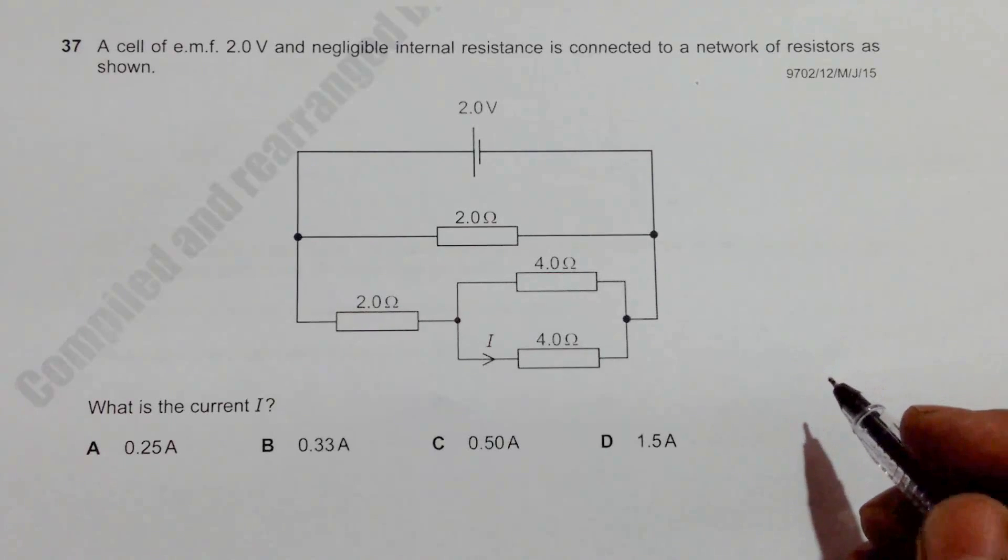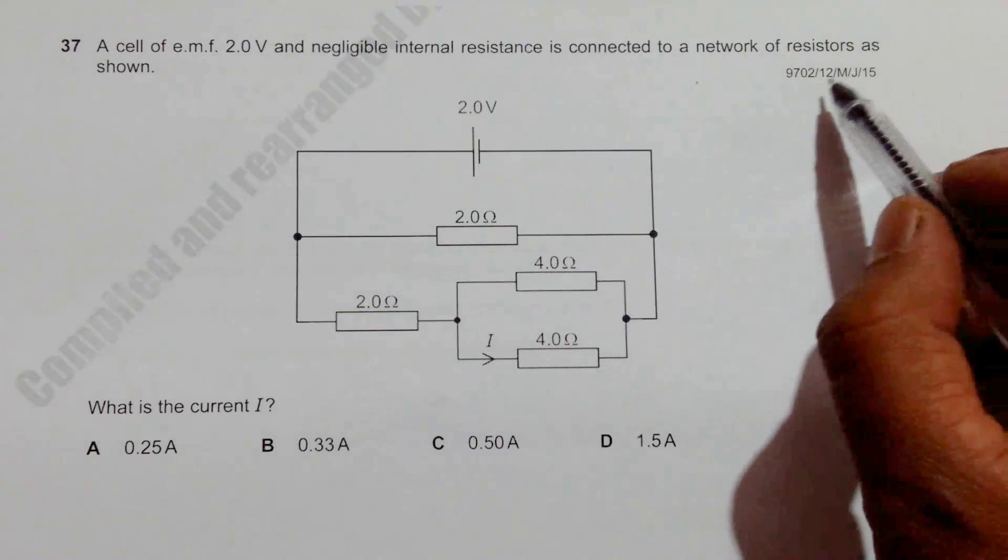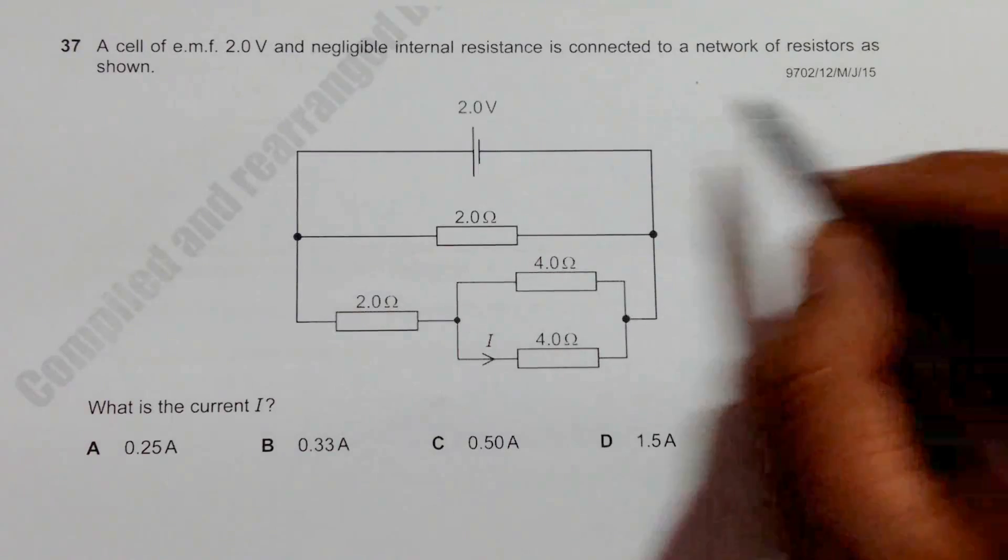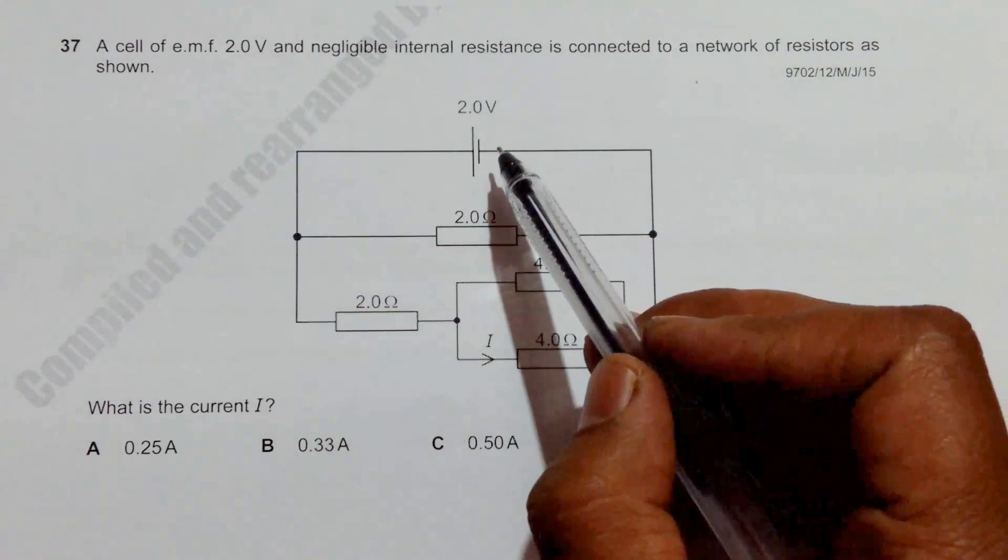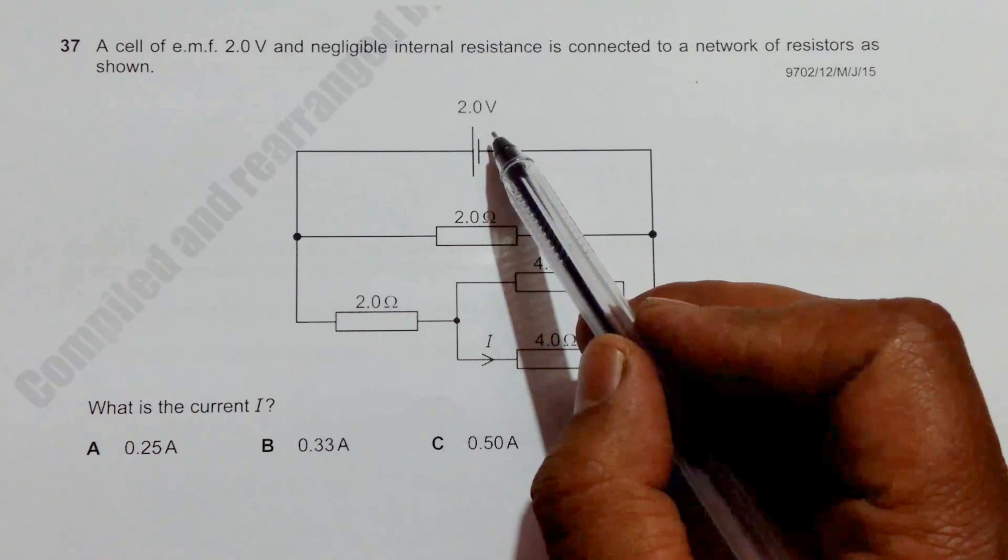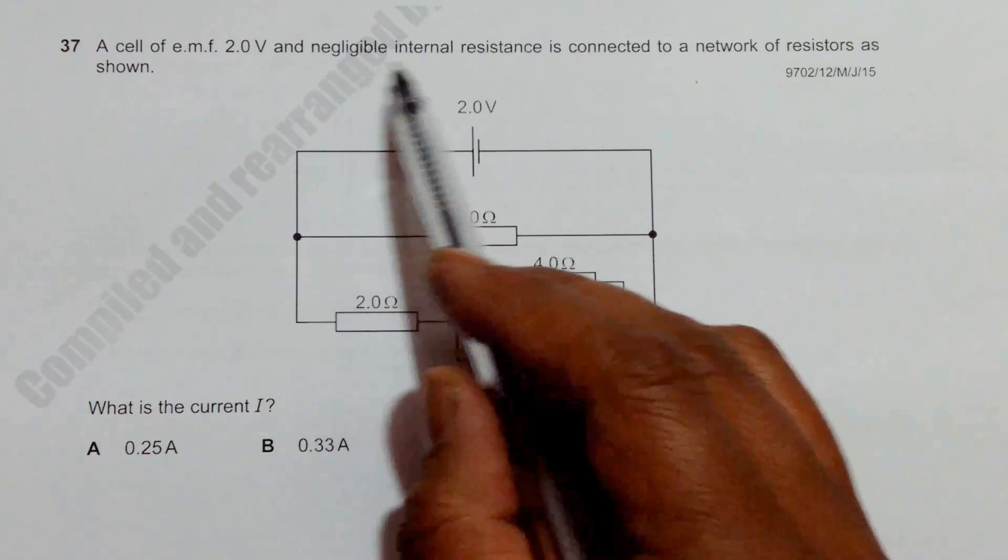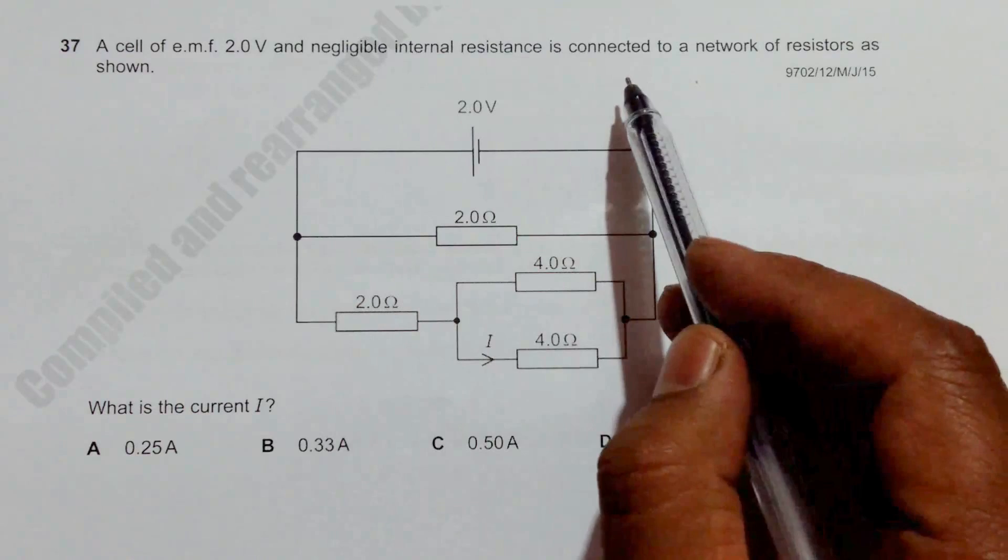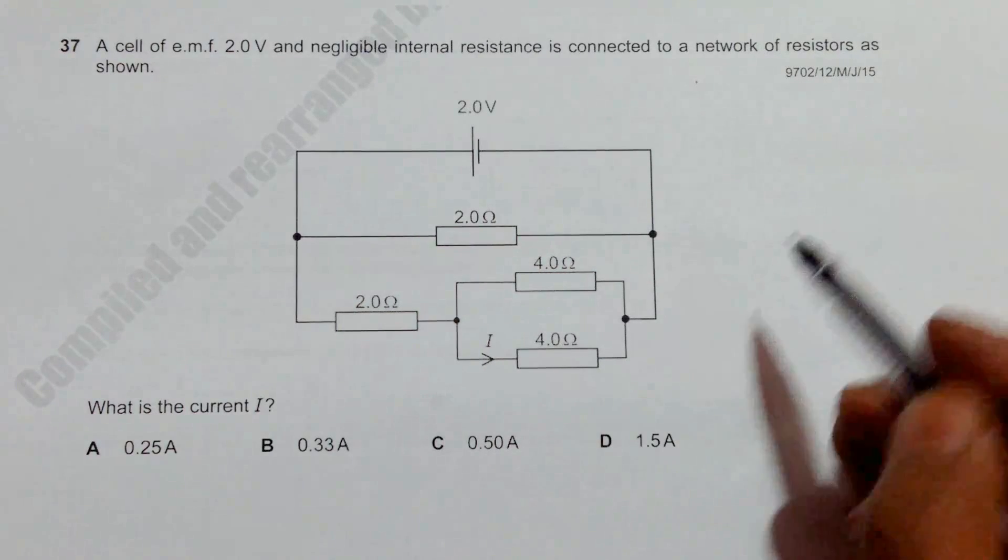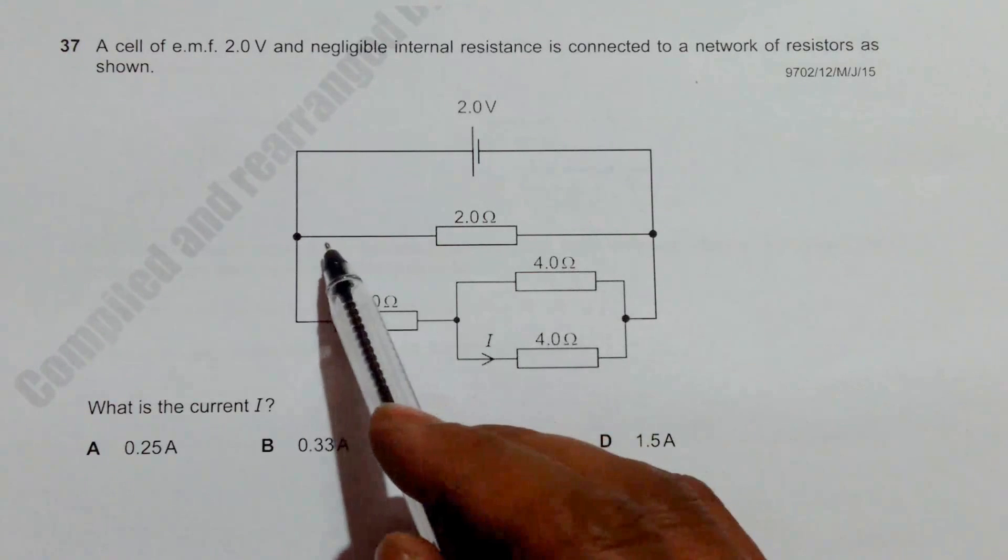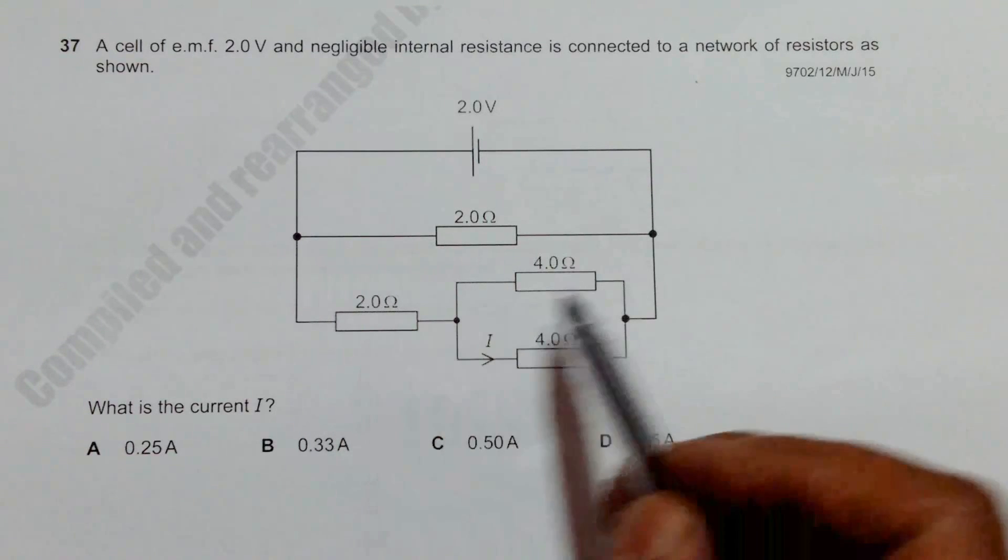This is question 37 from 2015 May June paper 12. It says there's a cell of EMF 2 volt which has negligible internal resistance and is connected to a network of resistors as shown. So we have a 2 ohm resistor here, 2 ohm here, 4 ohm and 4 ohm.